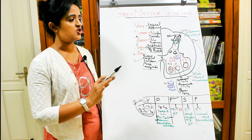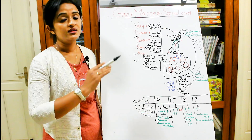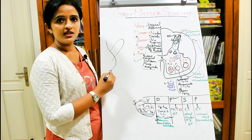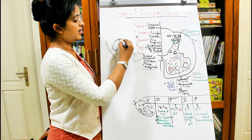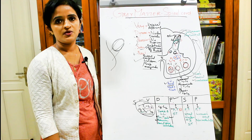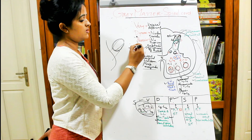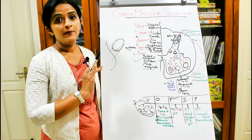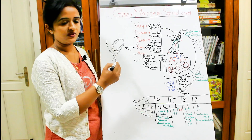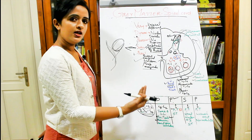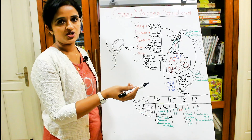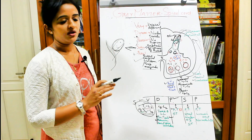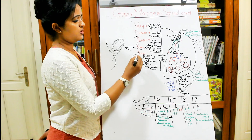Substantia gelatinosa of Rolando carries pain and temperature. One important point: when we discussed sections of the medulla, we saw that some fibers cut this posterior horn, and it converts into the spinal nucleus and tract of trigeminal. It is the substantia gelatinosa of Rolando that gets converted into the spinal nucleus and tract of trigeminal. Please view that session on the medulla — the internal arcuate fibers cut off this portion, continuing upward as the spinal nucleus and tract of trigeminal.